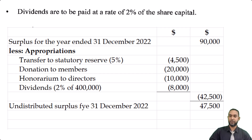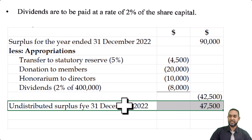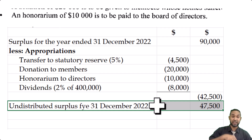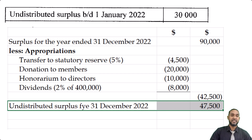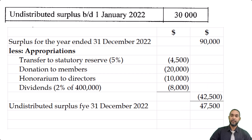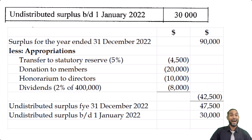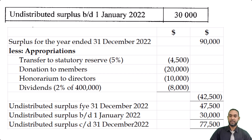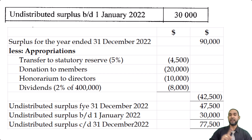Subtracting $42,500 from $90,000 gives $47,500 — this is the undistributed surplus for the current year. We also have the previously undistributed surplus brought forward at the start of the year of $30,000. Adding those together gives us the total undistributed surplus at the end of the year, carried forward. That's the end of part two.